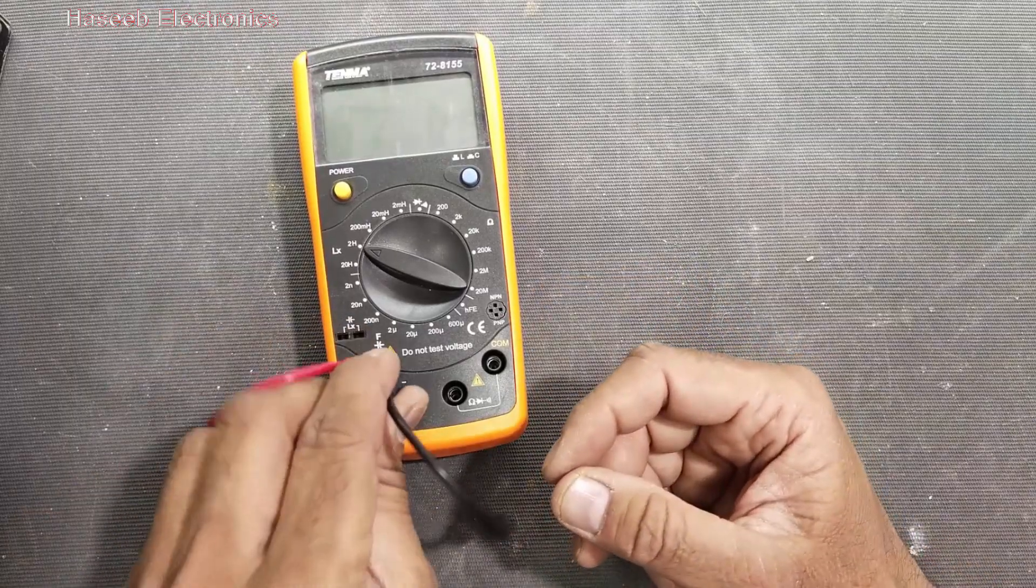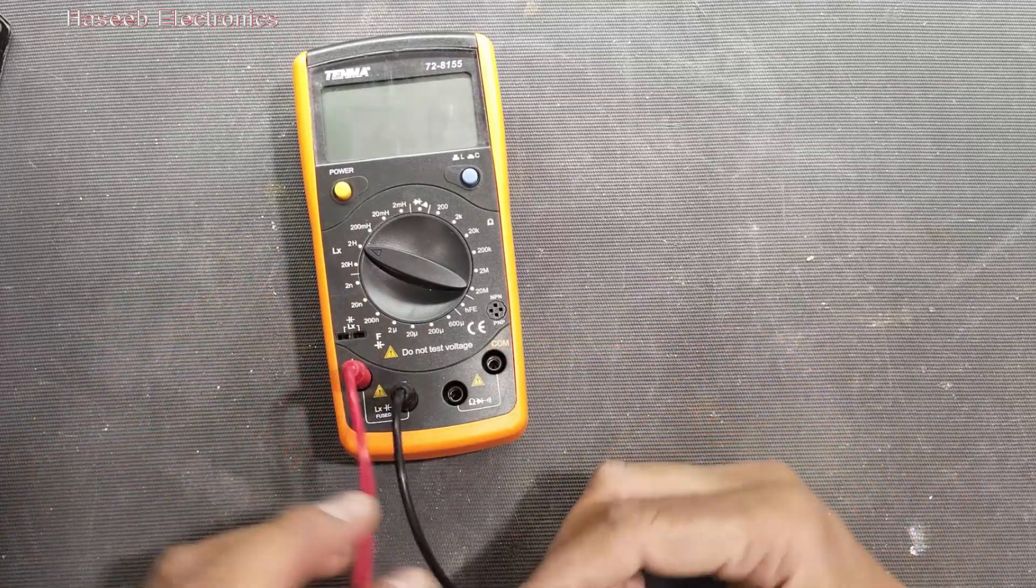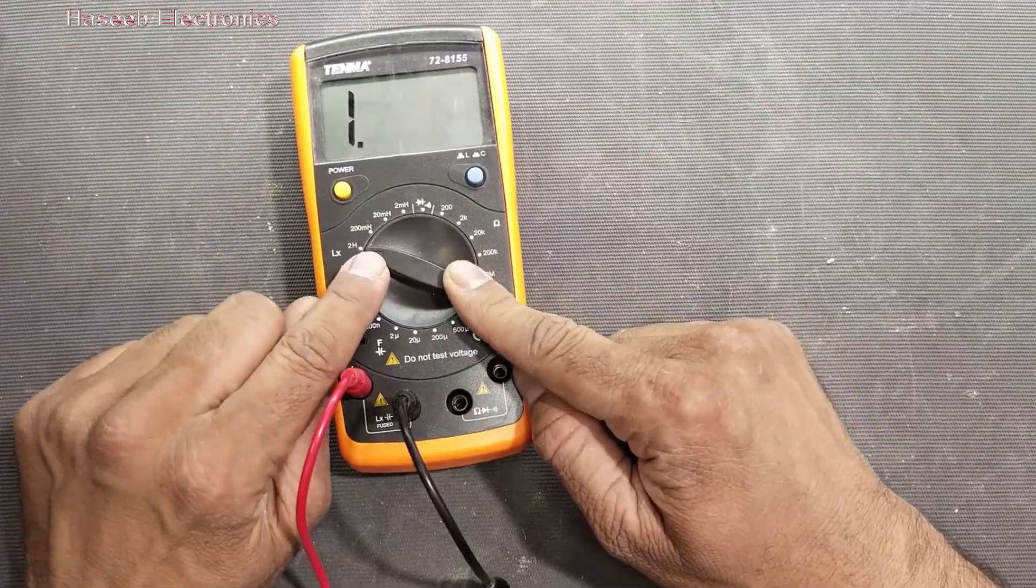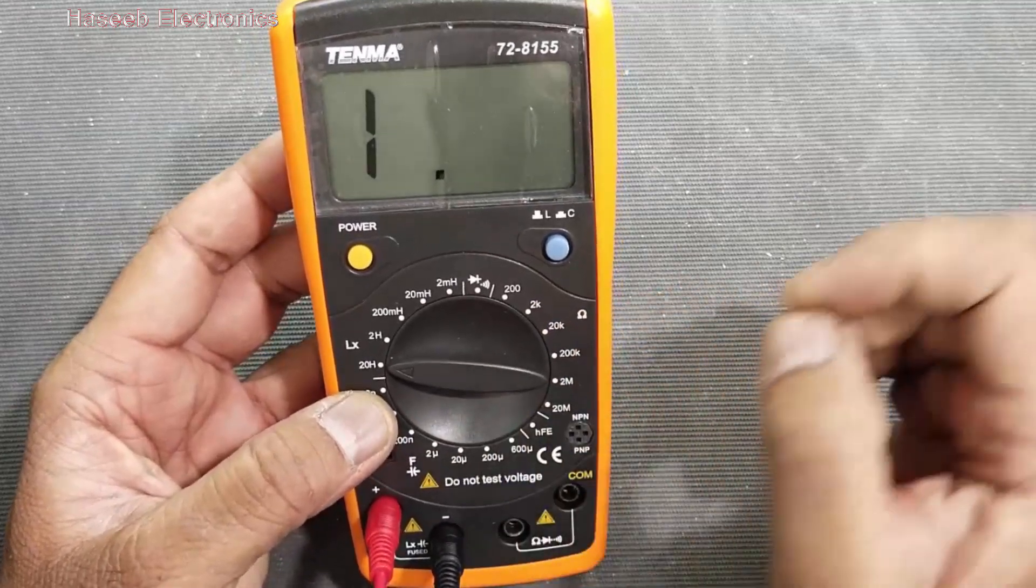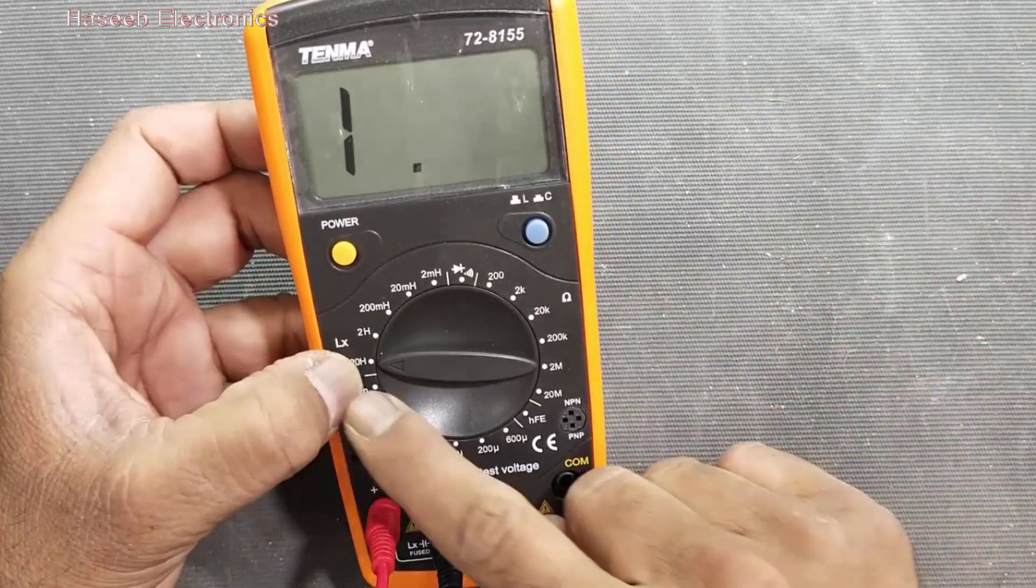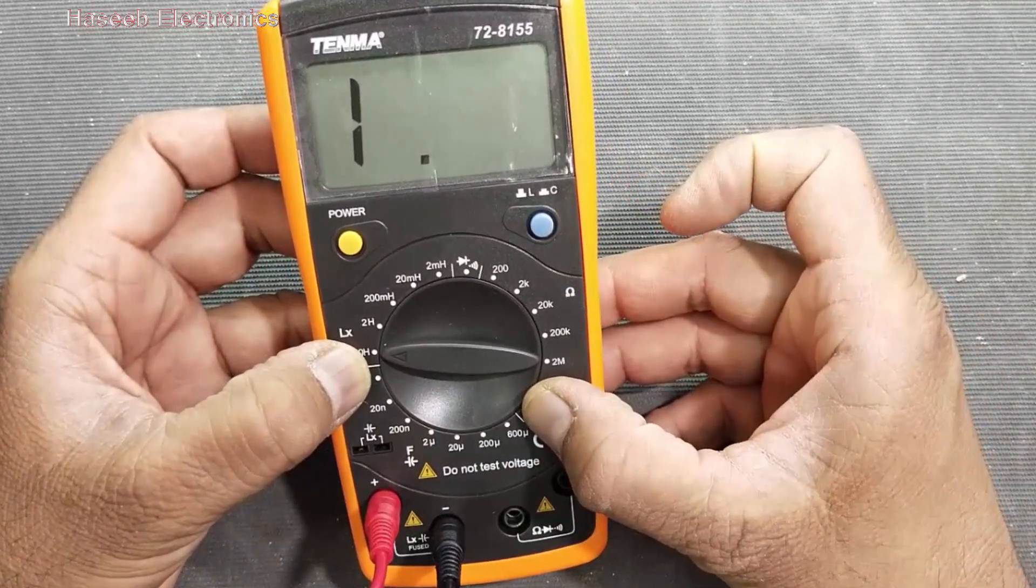Insert these test leads in the test jacks, power on. Here we have inductance from 2 millihenry to 20 hundred. So here is inductance, then we have from this point to here up to 600 microfarad capacitor range.